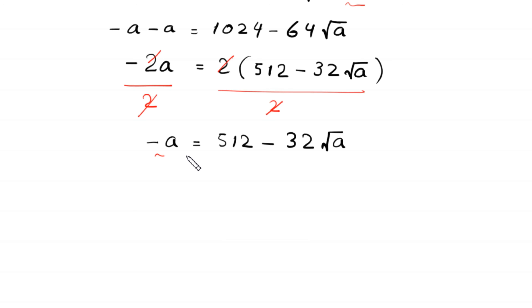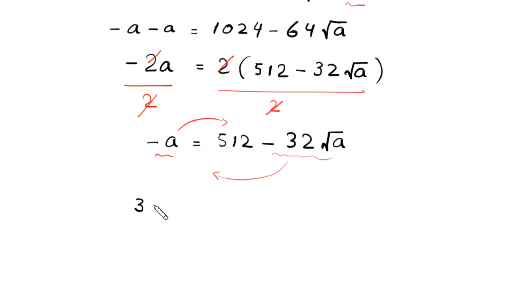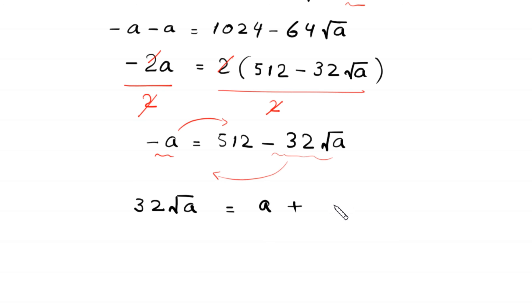Now we move -a to the right-hand side and -32√a to the left-hand side. This becomes 32√a = a + 512.